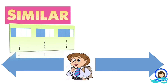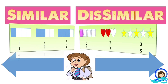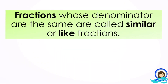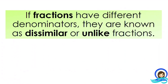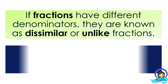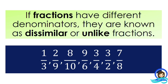How do you differentiate similar from dissimilar fractions? Fractions whose denominators are the same are called similar or like fractions. In the example below, the denominators are all 9 and they are all the same, that is why they are examples of similar or like fractions. If fractions have different denominators, they are known as dissimilar or unlike fractions, such as in the example below where all the denominators are different.